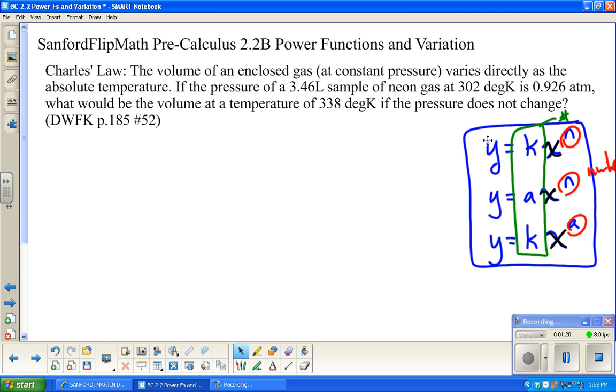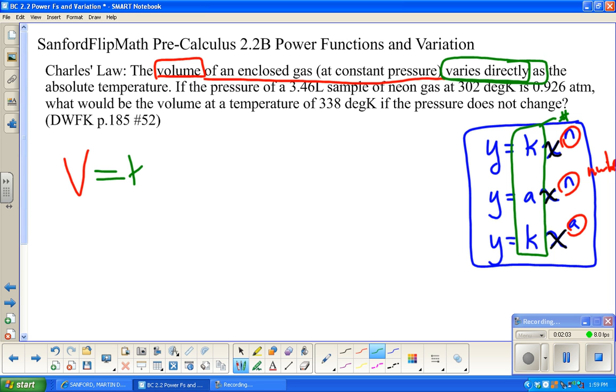This example is from page 185 in the book, number 52. Charles Law: The volume of an enclosed gas at constant pressure varies directly as the absolute temperature. Volume varies directly equals k times, direct variation means multiplication, times the absolute temperature. So we're talking about Kelvin. This is the equation: V = kT.